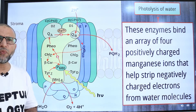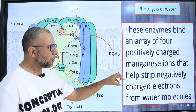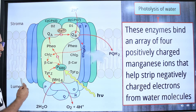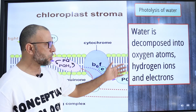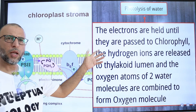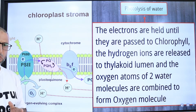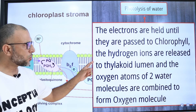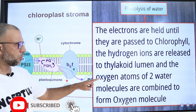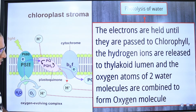These enzymes bind an array of four positively charged manganese ions that help to strip negatively charged electrons from water molecules. During photolysis of water, water is decomposed into oxygen atoms, hydrogen ions, and electrons. The electrons are held until they are passed to the chlorophyll A molecule of photosystem II, and the hydrogen ions are released to the thylakoid lumen. Oxygen atoms from two water molecules are combined to form an oxygen molecule.